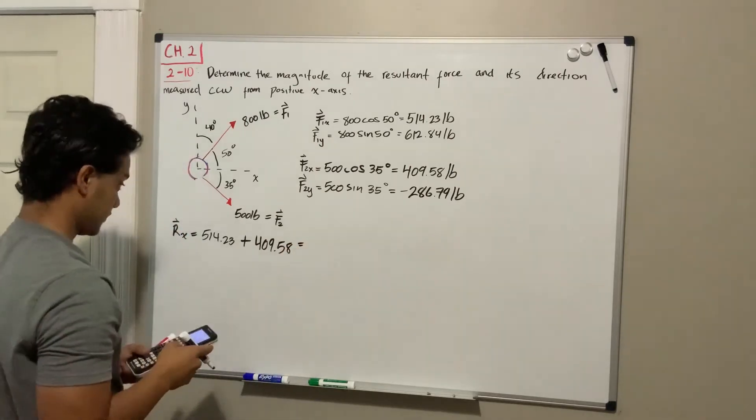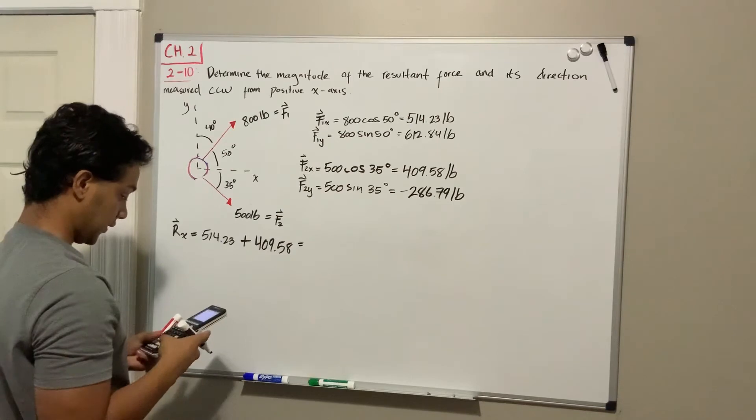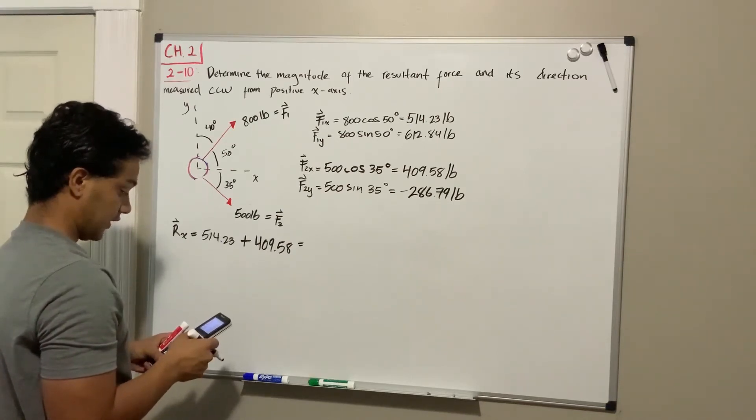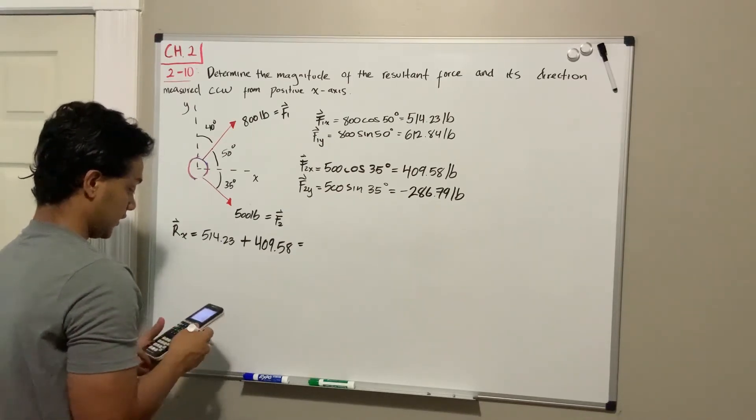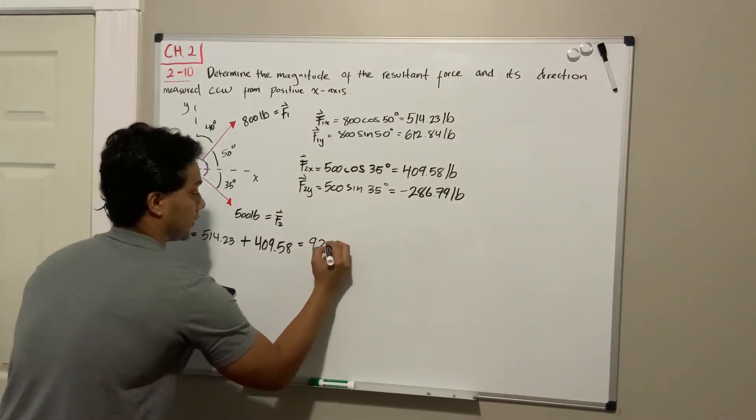Which will give us, if we add these two guys, 514.23 plus the 409, it's gonna give us 923.8 pounds.